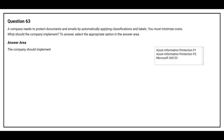Question number 63. A company needs to protect documents and emails by automatically applying classifications and labels. You must minimize cost. What should the company implement? The correct answer is Azure Information Protection P2.